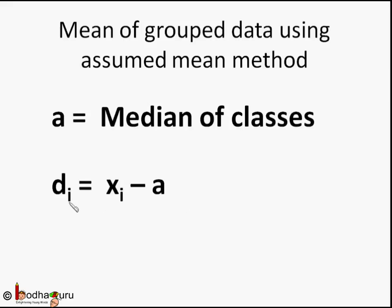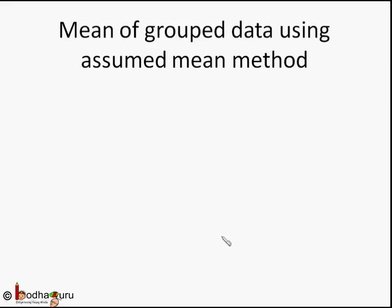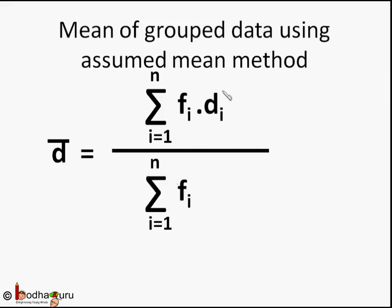Then we calculate mean of deviations, that is d̄. This is sum of product of frequency and deviation divided by sum of frequencies. Then we add this mean of deviation, that is d̄, with a to get x̄ which is the mean of the data. It may look complicated at first but these are simpler calculations for each row in the table.